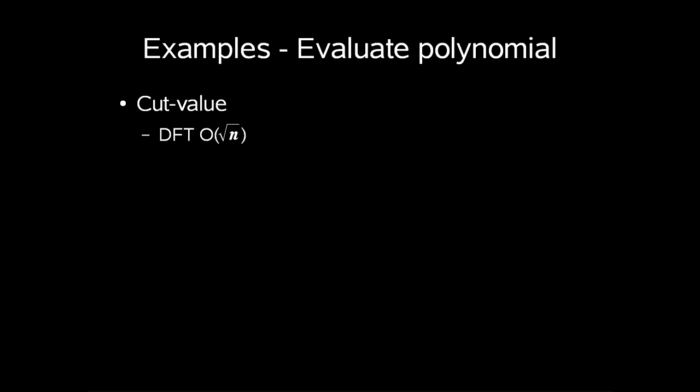This was a long discussion to get where we actually want to be. The actual method I actually wanted to present to you is called cut value. Using this I will show you how we can create an algorithm that would actually push the execution time of our discrete Fourier transformation down to O of square root n.